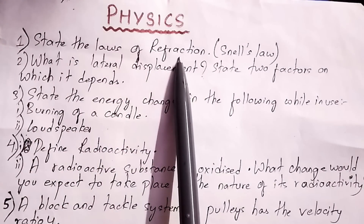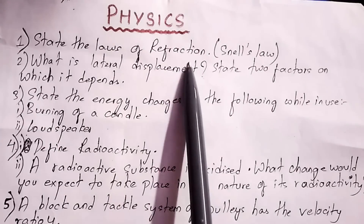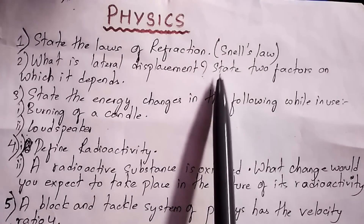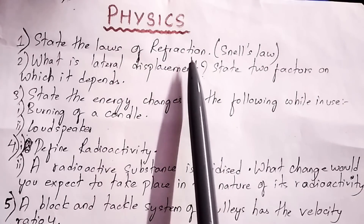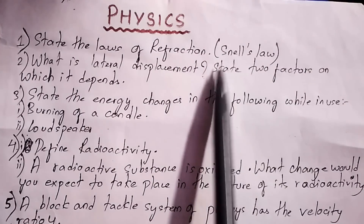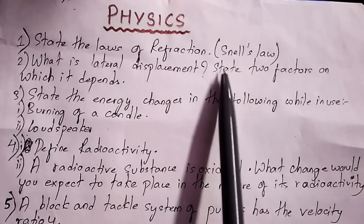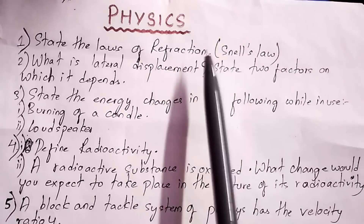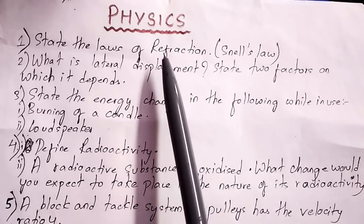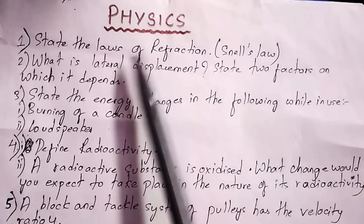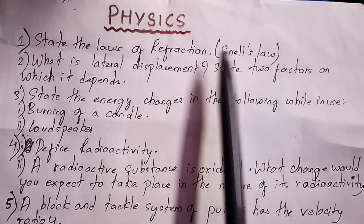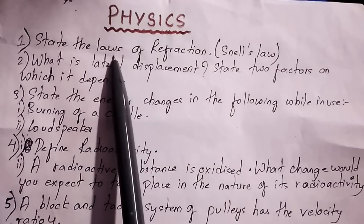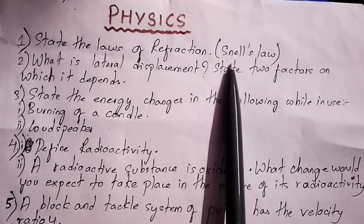There are two laws of refraction. The first law is that the incident ray, the refracted ray, and the normal to the point of incidence all lie in the same plane. The second law of refraction states that the ratio of the sine of the angle of incidence to the sine of the angle of refraction is constant for a given pair of media. This is also called Snell's law.